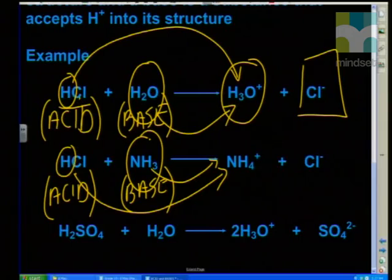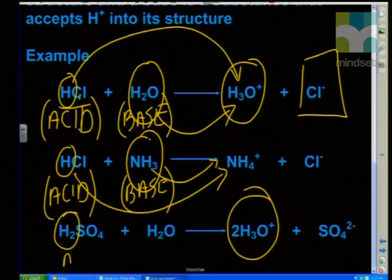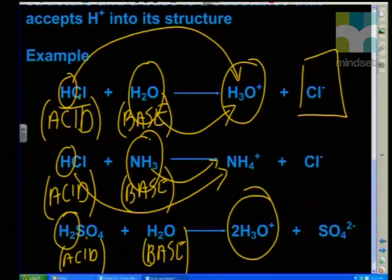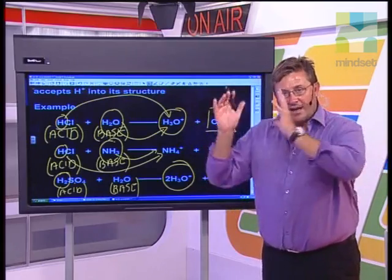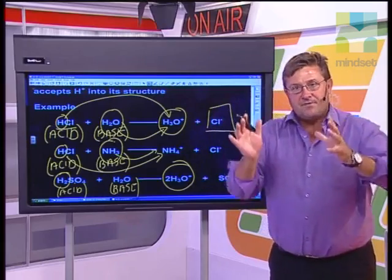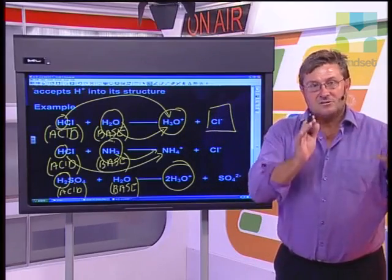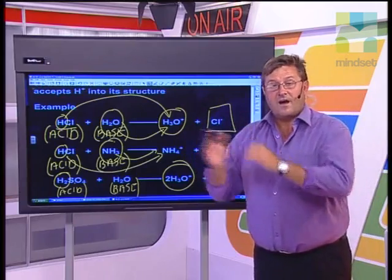H₂SO₄ works exactly the same way; however, it donates two protons to form two hydronium ions. So H₂SO₄ must be the acid, and water is accepting the protons to form the hydronium ions — that's the base. We've now got two hydronium ions and the sulfate ion as the residue from the sulfuric acid. Can you see now how we identify our acids and bases? Not through hydrogen ions and hydroxide ions, but through whether something is able to donate protons or accept protons.